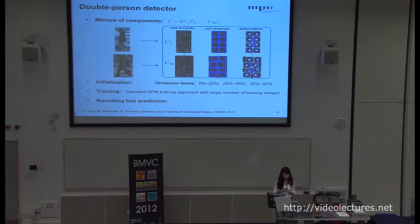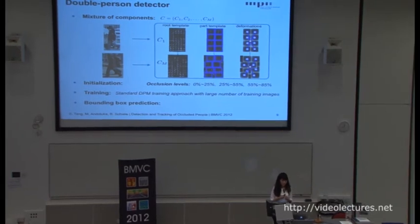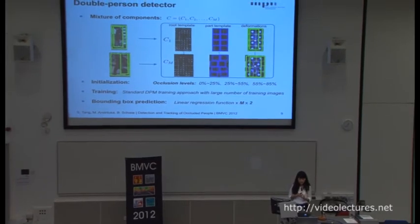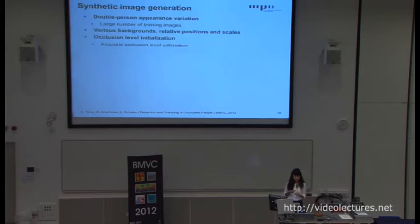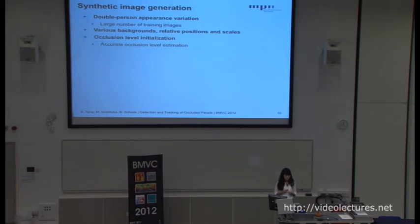We use the standard DPM training algorithm but with a larger number of training images because of the appearance variability of two people. In the end, by learning two separate linear regression functions for individual persons, we can predict the bounding box for both people. Because the appearance variability from single person to double person increases exponentially, and for training images we also want various backgrounds, relative positions and scales for two people, we need a large number of training images. At the same time, for each training image, we also need accurate occlusion level estimation.